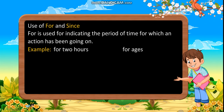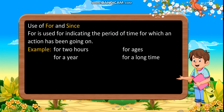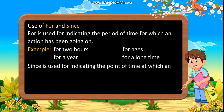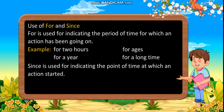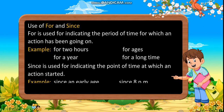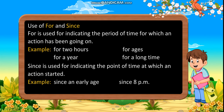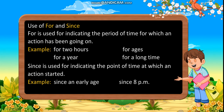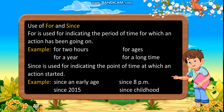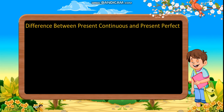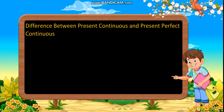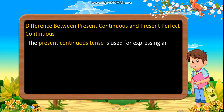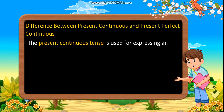'For' is used for indicating the period of time for which an action has been going on. Examples: for two hours, for a year, for ages, for a long time. 'Since' is used for indicating the point of time at which an action started. Examples: since an early age, since 8 p.m., since 2015, since childhood.